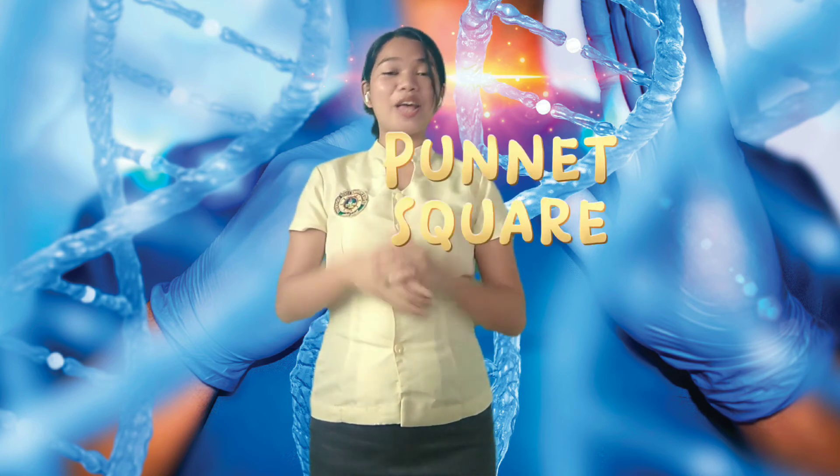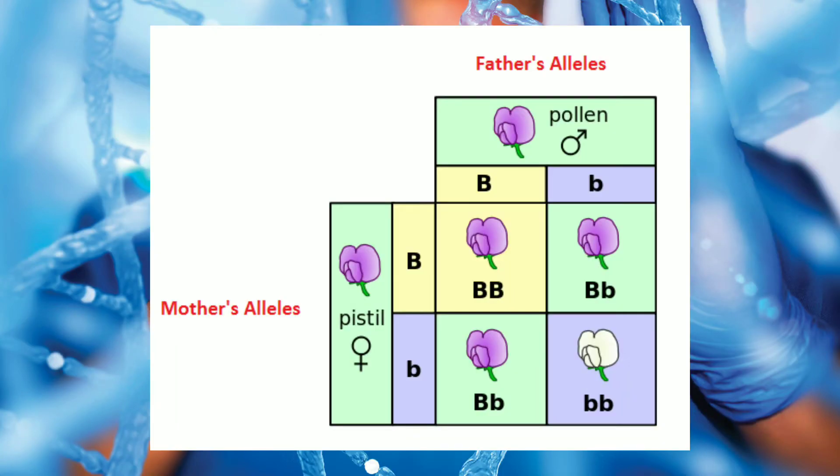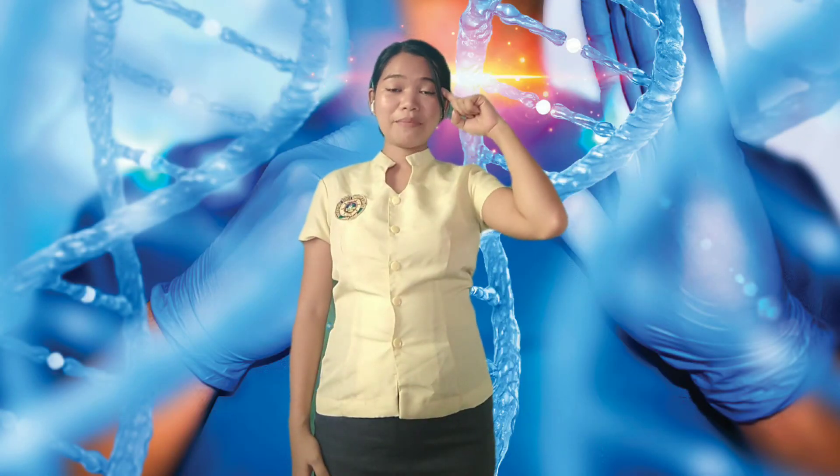Excellent! It is the Punnett square. When preparing a Punnett square, all the gamete types produced by the male parent are lined up vertically on top of the quadrants, whereas the gamete types produced by the female parent are lined up on the left side of the quadrants, or vice versa. Bear in mind that in genetics, the dominant allele must suppress the expression of the recessive allele.